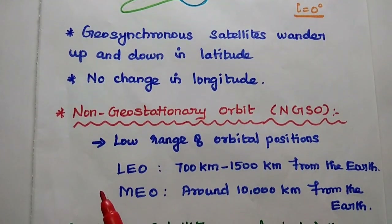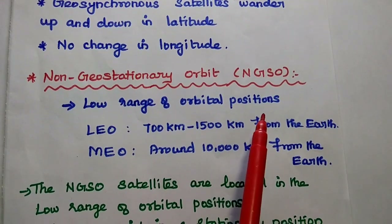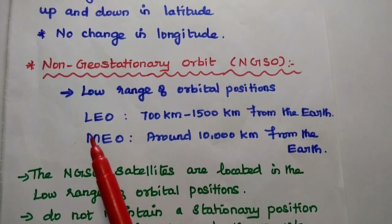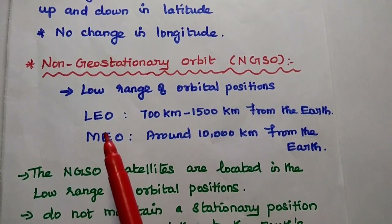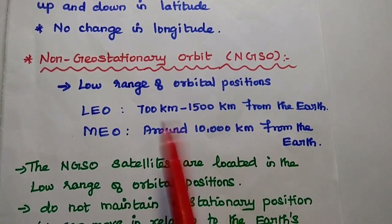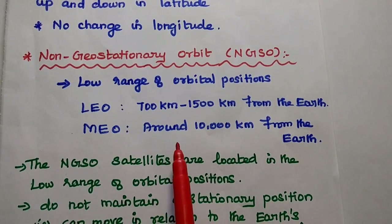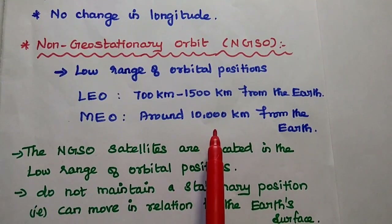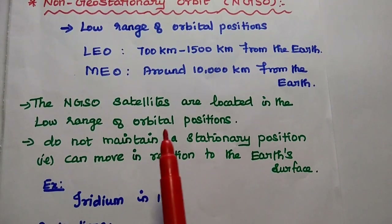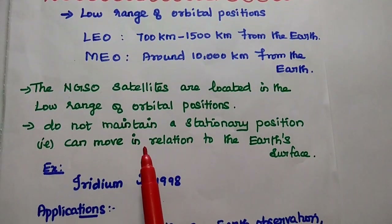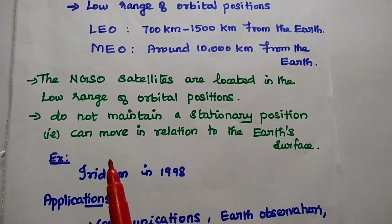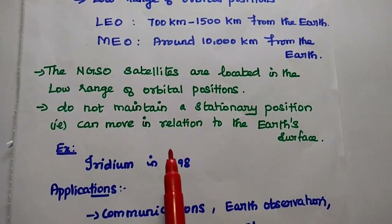Next is the non-geostationary orbit, simply NGSO. It represents the low range of orbital positions. Examples include LEO (Low Earth Orbit), which ranges from 700 km to 1,500 km from the earth, and MEO (Medium Earth Orbit), which is around 10,000 km from the earth. In general, non-geostationary satellites are located in the low range of orbital positions and do not maintain a stationary position — they move in relation to the earth's surface.